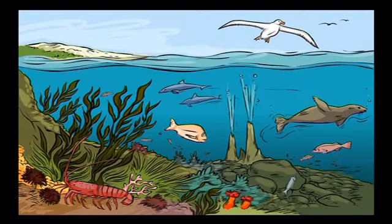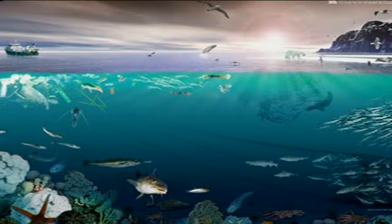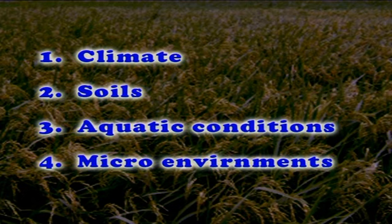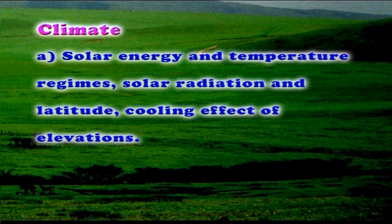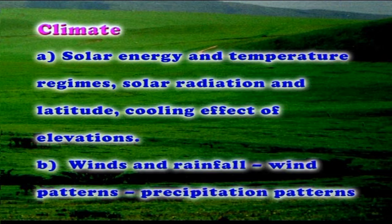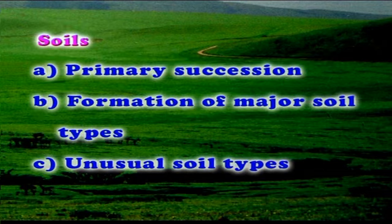The abiotic factors vary and control life on terrestrial and aquatic ecosystems. All biogeographic patterns are ultimately influenced by the geographic templates, referring to the distributions and patterns of geographic variation across various geographic gradients. These include climate, soils, aquatic conditions, and microenvironments. The climatic parameters involve solar energy and temperature regimes, solar radiation and latitude, cooling effect of elevations, and the role of winds and rainfall. Soils are the primary conditions for plant growth, controlling primary succession, major soil types, unusual soil types, and the plants growing above them.